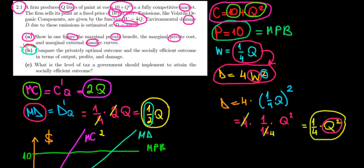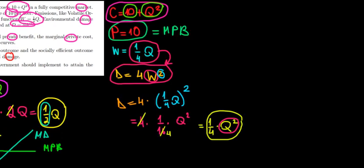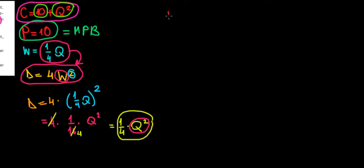Let's start solving part B of this question. We have to compare the privately optimal outcome and the socially efficient outcome in terms of output, profits, and damage — meaning we want to know how much we produce, how much money we make, and what the damage will be under two cases: private optimal and social optimal.